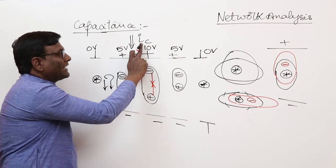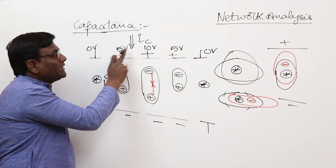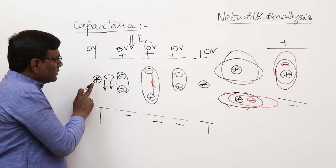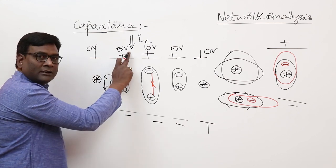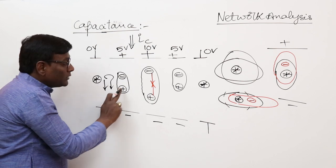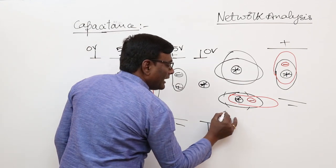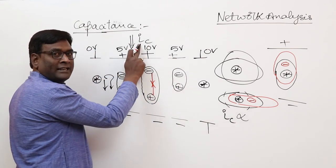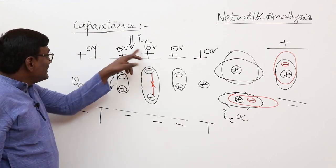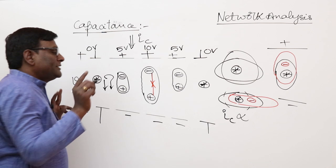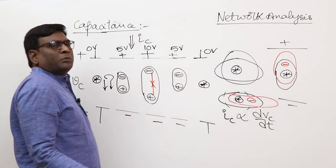By passive sign convention, current entering the positive terminal means energy is being absorbed. So current ic is directly proportional to the change of voltage, not the voltage itself. Therefore ic is proportional to dvc/dt. That proportionality constant is called capacitance C, giving us the equation ic = C · dvc/dt.